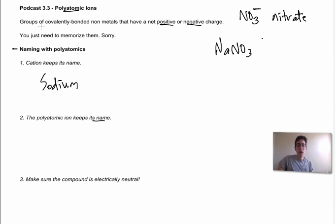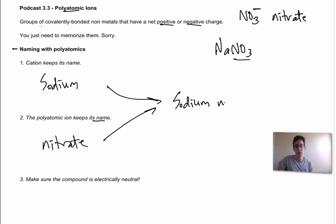There is no suffix you need to add, so we have NO3 here. This is called nitrate, and when you take these and you put them together into the compound name, we get sodium nitrate. Very simple.